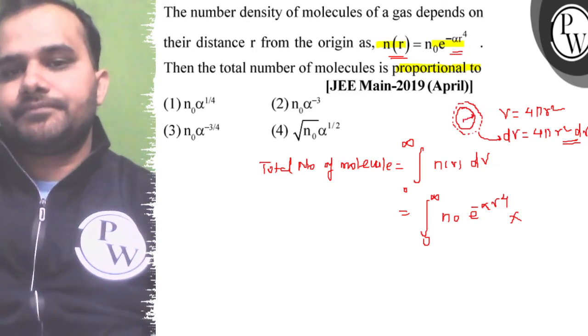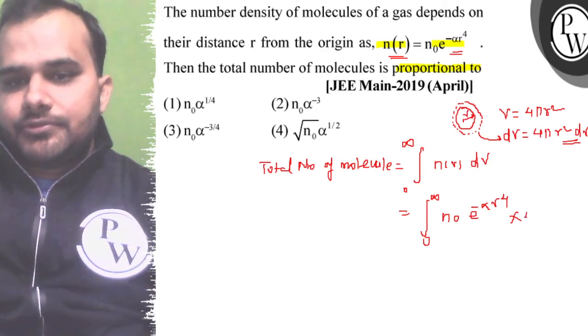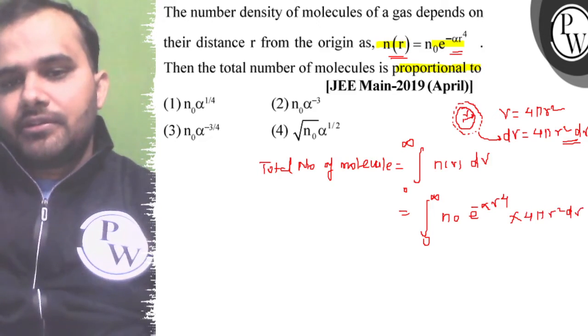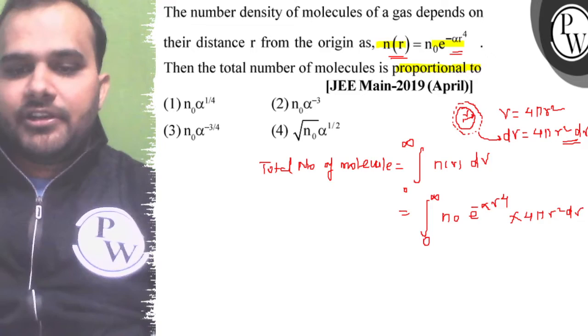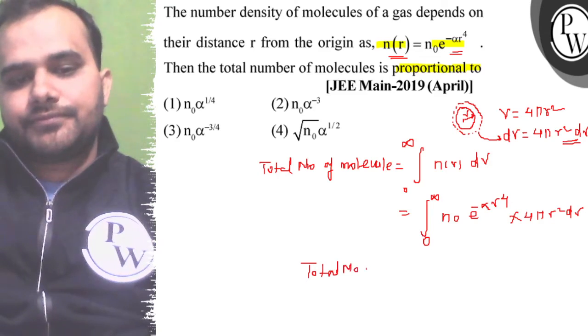Now this is an integration problem, a mathematical problem for integration. After solving this, you will find that the total number of molecules is directly proportional to n₀ into 4π into α^(-3/4).